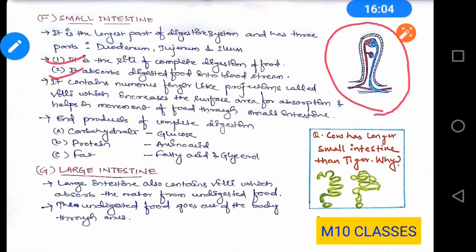The villi contain blood vessels and help in absorption of digested food into the bloodstream. After absorption comes assimilation — the simpler substances absorbed into the bloodstream reach different parts of the body, helping in growth, repair, and other cellular activities. The end products of complete digestion are: carbohydrates broken down into glucose, proteins into amino acids, and fats into fatty acids and glycerol. These substances are absorbed into the bloodstream.